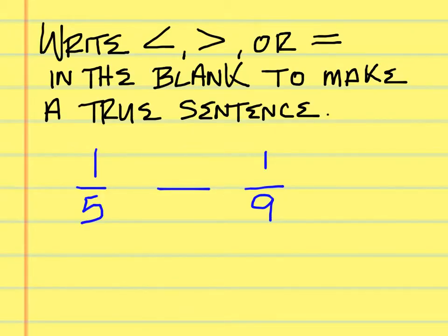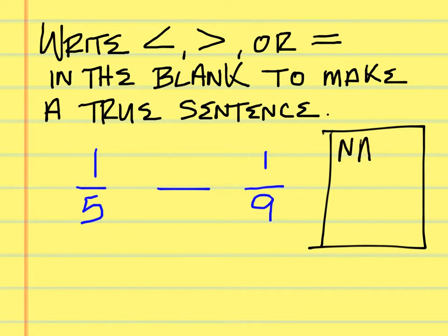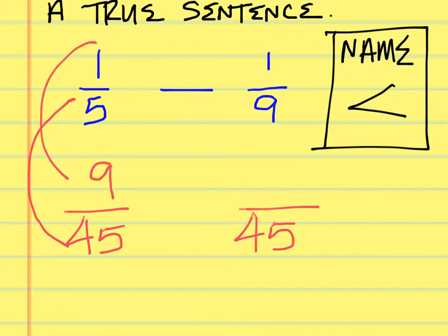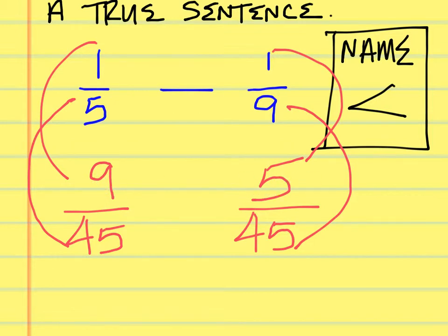Let's practice this. On your paper, make certain that you put your name at the top so I'll know which way is up — that way if you put in a sign you can't just turn the paper over and say it's actually greater than. It's got to be going just one specific way. The least common denominator in this problem is 45. To get 45 I multiply by 9, so 1 times 9 is 9. To get 45 here I multiply by 5, so 1 times 5 is 5. Nine is greater than five, so it should be a greater than sign — one-fifth is greater than one-ninth.